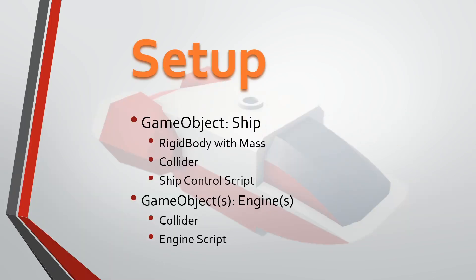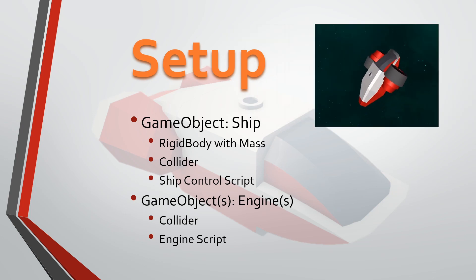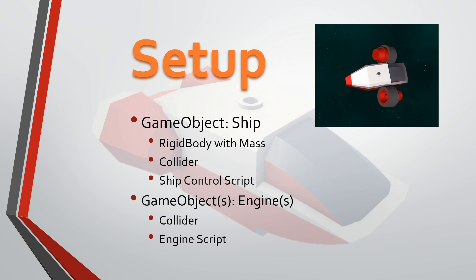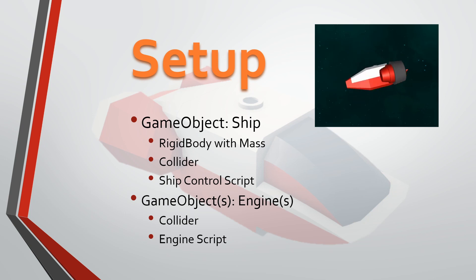I'm going to jump into rockets first because this is something new and it's probably more interesting. To start out, we're going to talk about the setup. We're going to have a game object which is just a ship — you can kind of see that in the background. It's also going to have a rigid body with mass, it will have a collider, and it will have a ship control script.